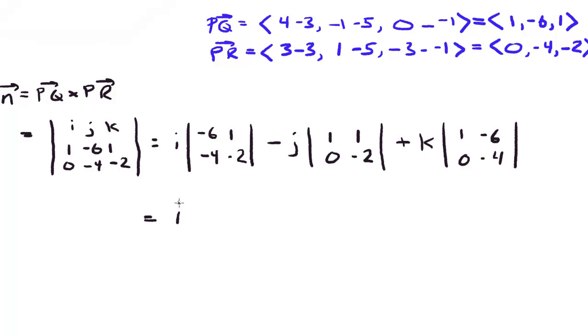So we're going to have i times, and then we'll evaluate the 2 by 2. So that'll give me 12 plus 4, minus j, and then -2 minus 0, plus k, -4 minus 0. So if we simplify that, that'll give me 16i plus 2j minus 4k.